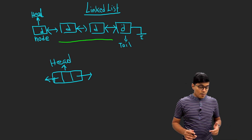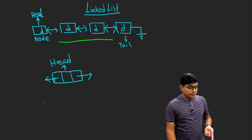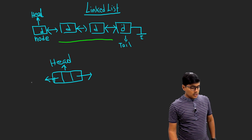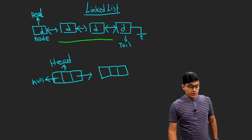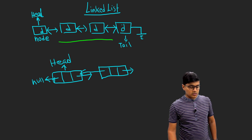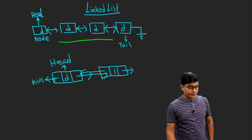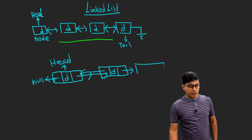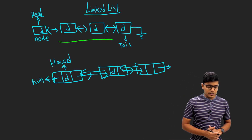The head node will have a reference to the previous and the next node. Since this is the first node, the previous reference will be null and the next will point to another node, which will also have references to next and previous. This pattern continues — the middle block is for data, and the structure repeats until the end of the list.